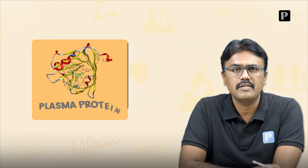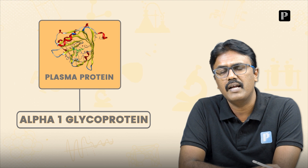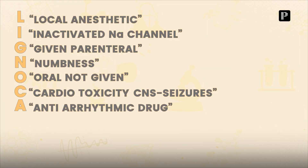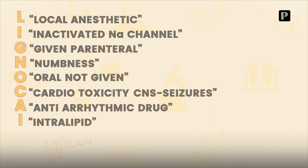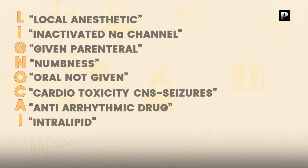The next letter is 'A' — remember that lignocaine is not only a local anesthetic, it is also an anti-arrhythmic drug. It also attaches to a plasma protein called alpha-1-acid glycoprotein. The next 'I' stands for intralipid — intralipid 20% is the antidote for local anesthetic toxicity.